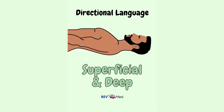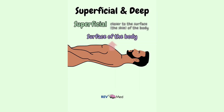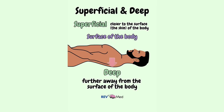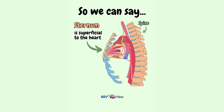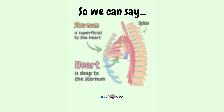Lastly, we have the terms superficial and deep. Superficial means closer to the surface — the skin of the body. Deep means further away from the surface of the body. So we can say that the sternum is superficial to the heart, or the heart is deep to the sternum.